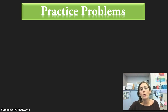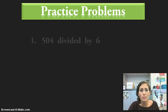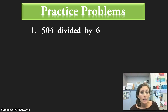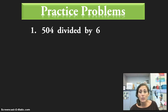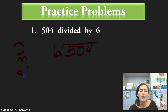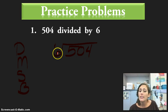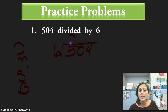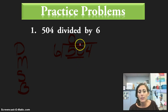Now we're going to do our practice problems — write 'practice' in your math journal. The first practice problem is 504, which is our dividend, divided by 6, which is our divisor. Our learning goal is zeros in the quotient. Does 6 go into 5? Since 5 is smaller than 6, we put a zero above the 5. Now we're looking at 6 going into 50, and keeping your place value lined up is really important.